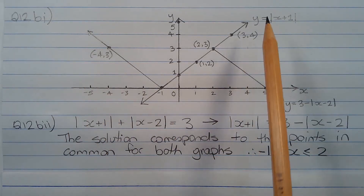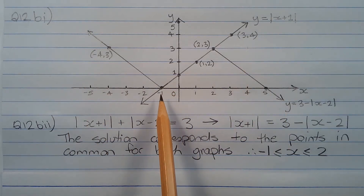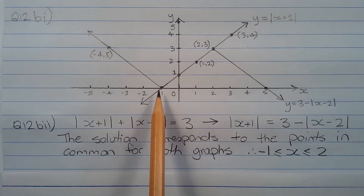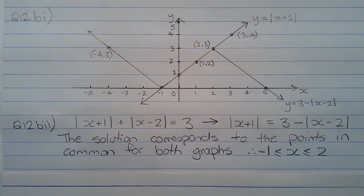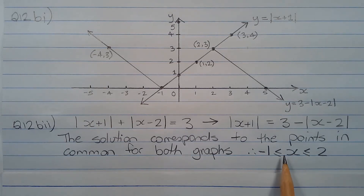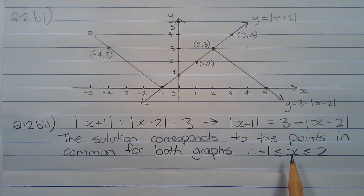Going back to the graphs, we can see that the points in common occur from x equals negative 1 right through to x equals positive 2. Therefore, the solution is x is greater than or equal to negative 1 and less than or equal to 2.